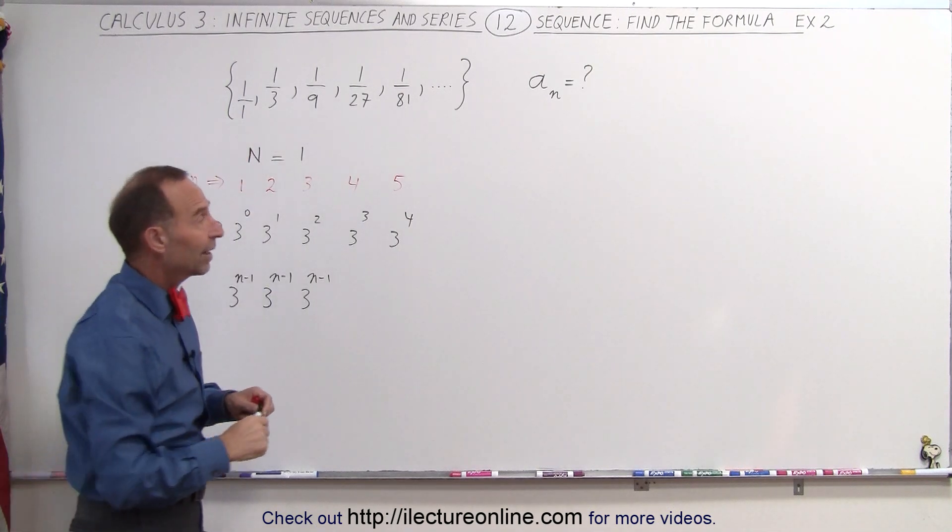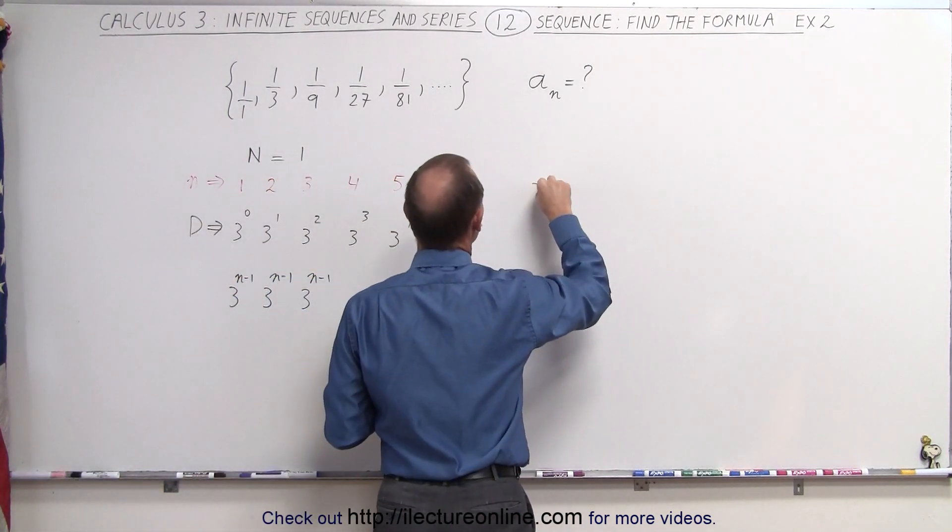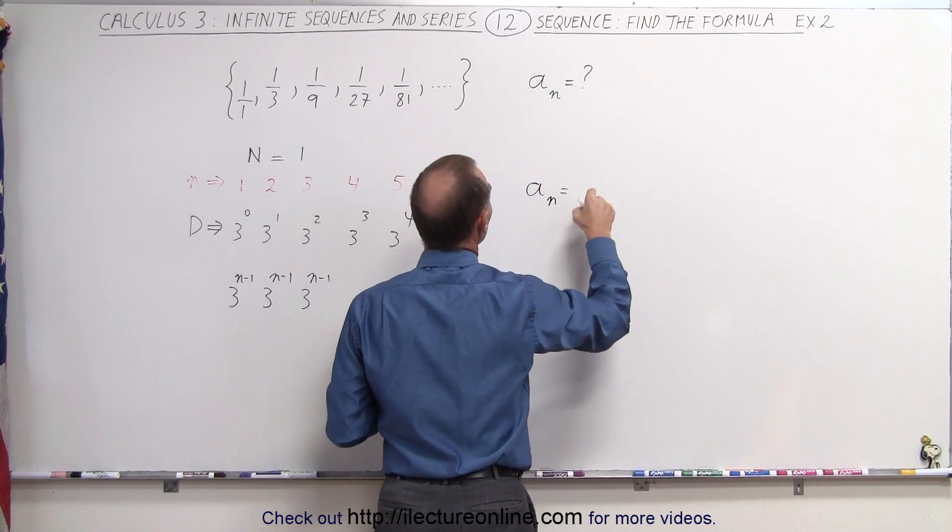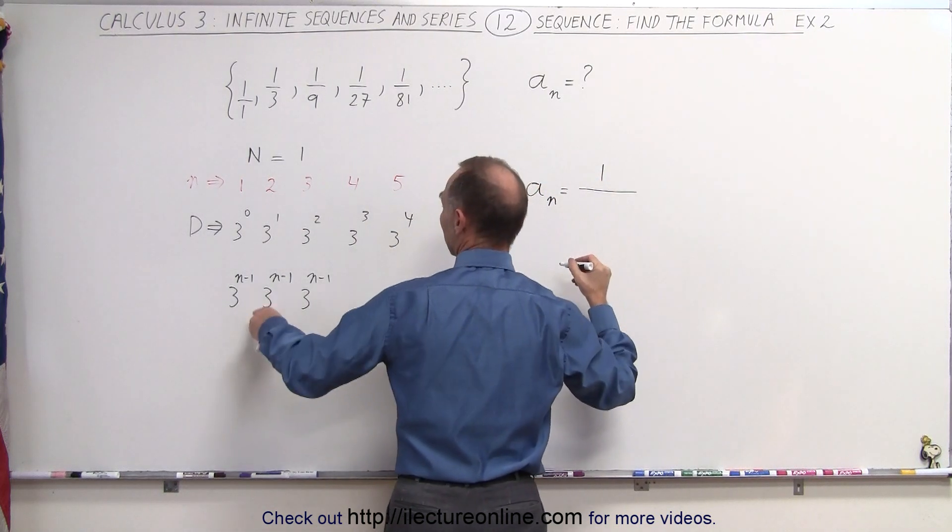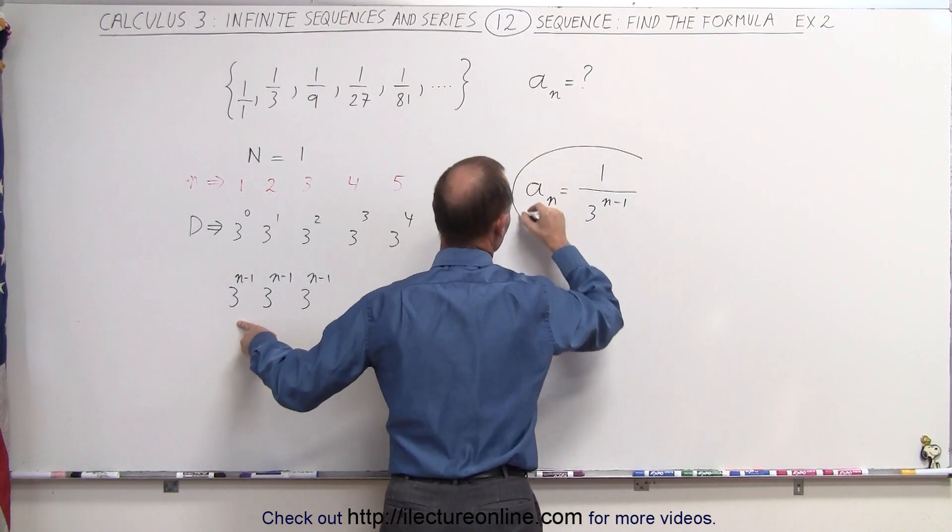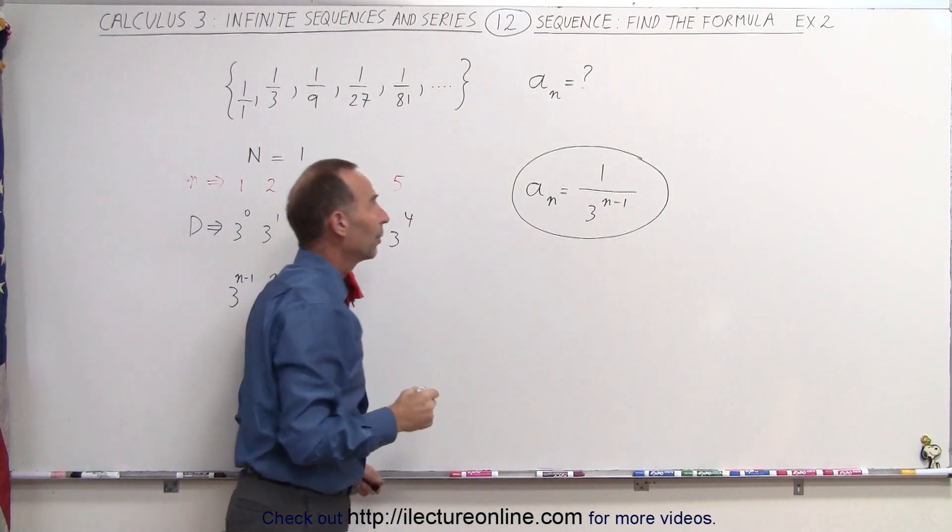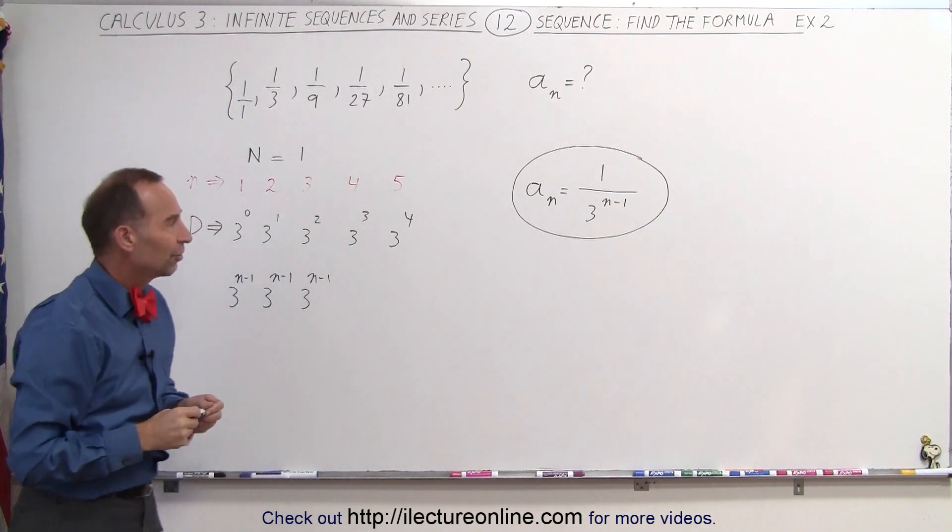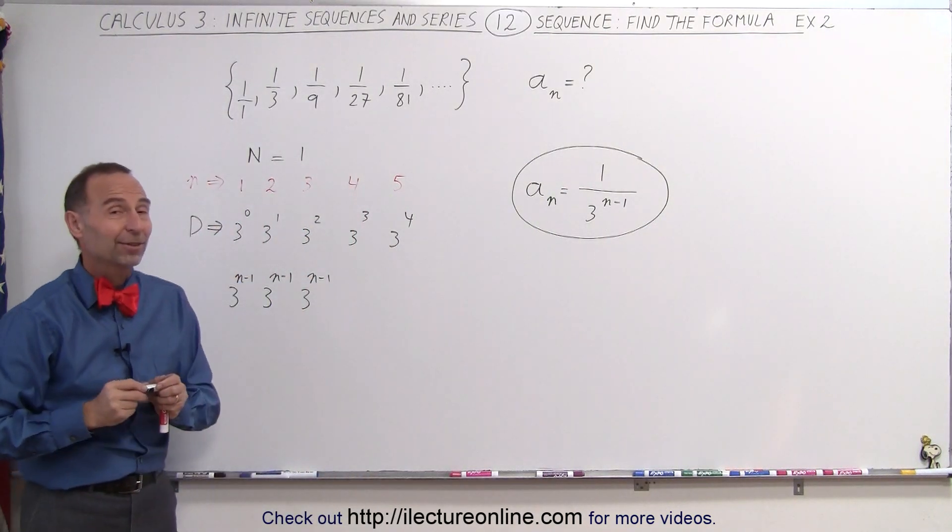Which then means that the general formula for that sequence, a sub n, is going to be equal to 1 for the numerator, divided by 3 to the n minus 1 for the denominator. And that's how we come up with the formula for that particular sequence. That's how it's done.